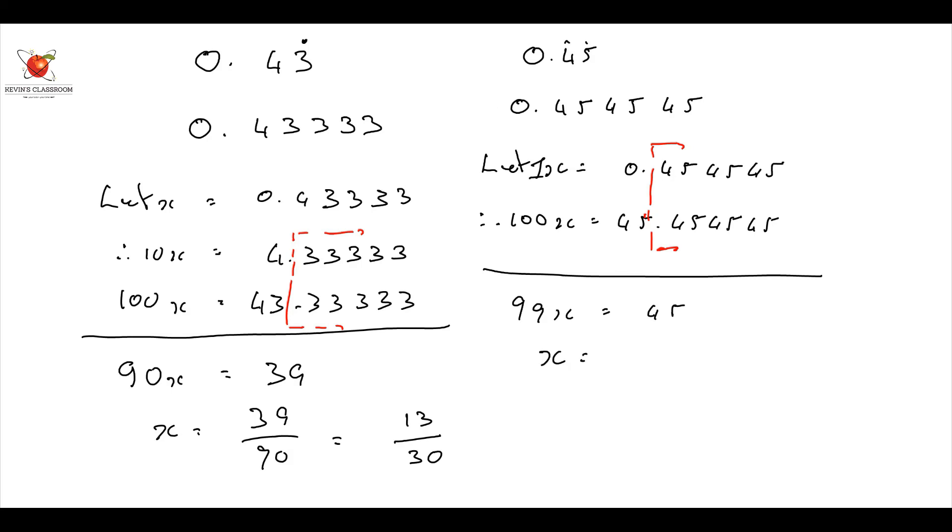Therefore, x is going to be equal to 45 over 99. And we can simplify that to give us 5 over 11, divide by 3. There you go. Simple. We're going to do loads of these. Thanks for watching. Enjoy. Cheers.